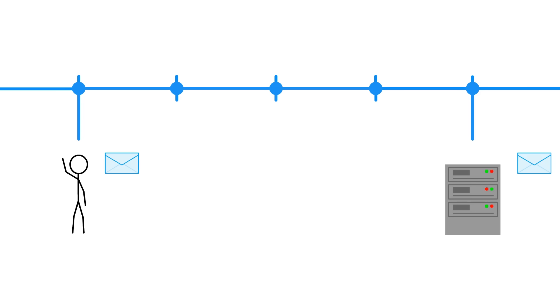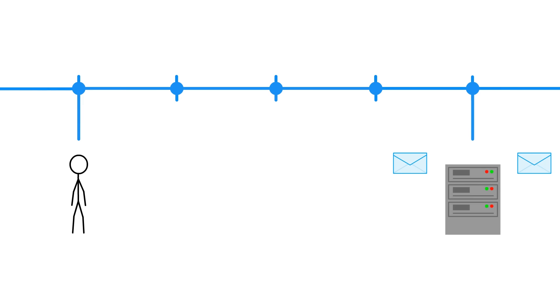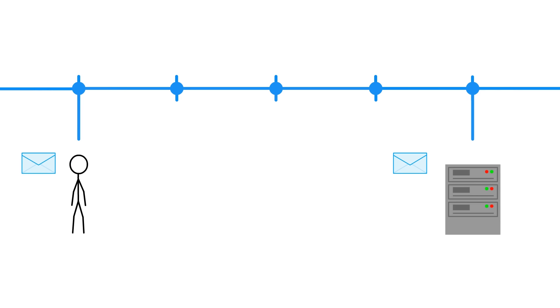For the moment, forget about encryption and just think about what it's trying to achieve. You and a server need to communicate with each other — and by you, I mean your computer. They need to be able to see the information you send them, and you need to be able to see the information they send you.